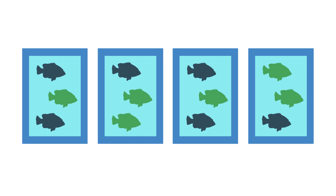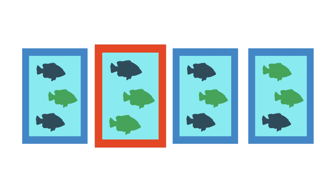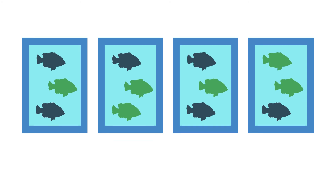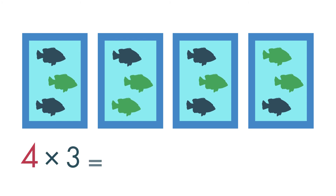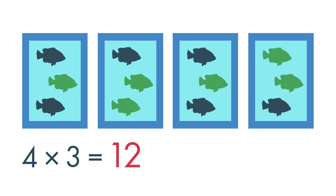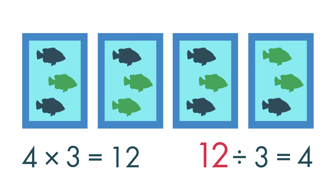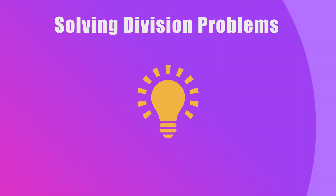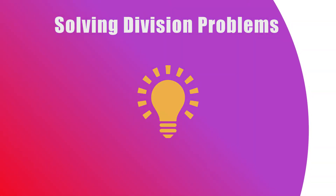Each tank has 3 fish. Use multiplication to check your work. 4 times 3 is equal to 12. So, 12 divided by 3 is equal to 4 is correct. Now you know how to use division to solve a word problem. See you next time!